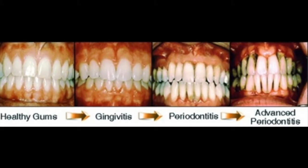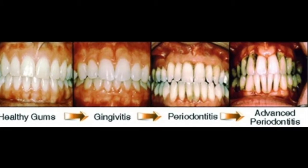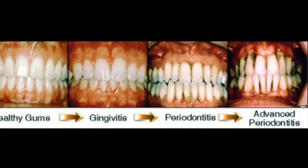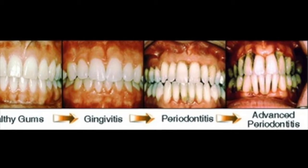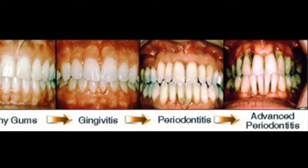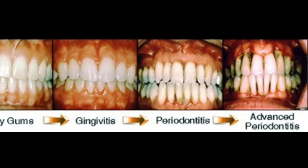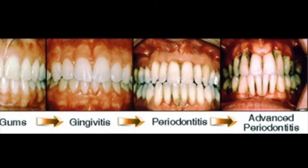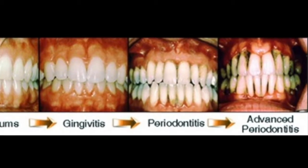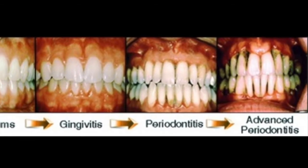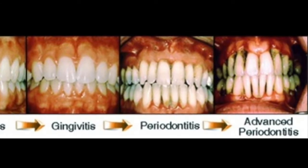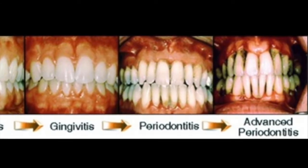Periodontal disease is the inflammatory reaction to bacteria under the gums. It is easy to overlook this disease because oftentimes patients do not feel pain. A few of the classic symptoms are bleeding while brushing or flossing, red swollen gums, and persistent bad breath.